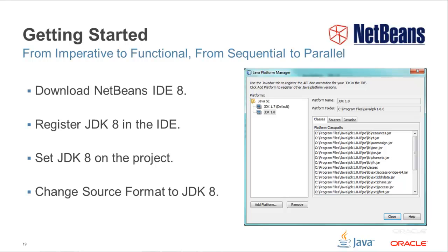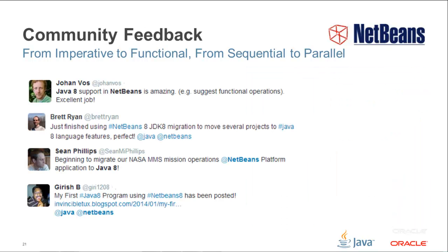Getting started with the tools you have seen in this screencast is easy. Download NetBeans IDE 8, download JDK 8, register the JDK in the IDE, set the JDK on the projects where you want to use it, change the source setting, and then you're ready to upgrade to Java 8. Community feedback on the IDE's tools for lambdas, functional operations, and method references has been very positive. If you have feedback too, use Twitter or blog about your experiences in leveraging the latest Java 8 features via the JDK's refactoring tools.